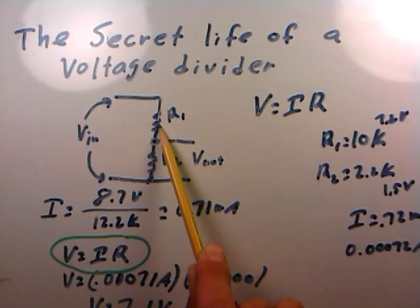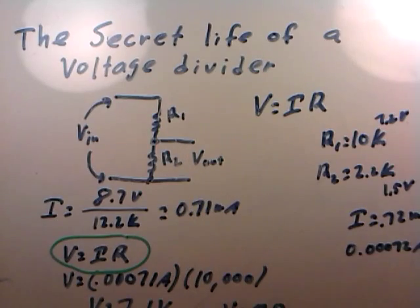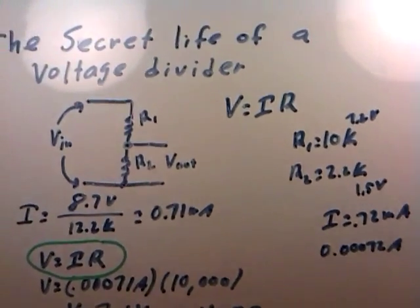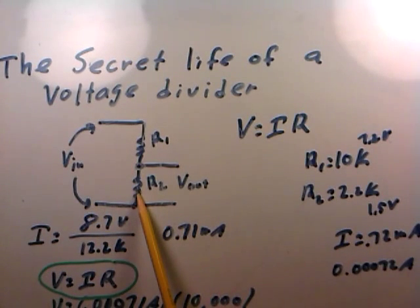You have 7.1 volts when you have a 10,000 ohm resistor with 0.71 milliamps flowing through it. And it's 1.56 volts when you have a 2.2 kiloohm resistor with 0.72 milliamps flowing through it.